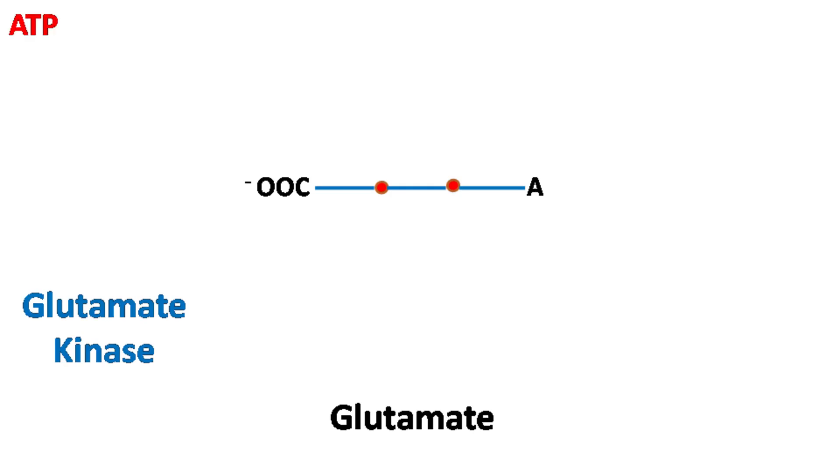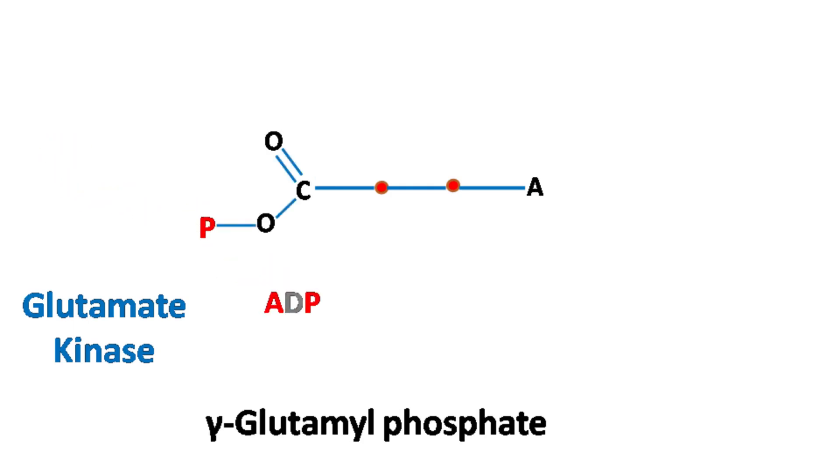In the first step, glutamate is phosphorylated by ATP in presence of enzyme glutamate kinase to give gamma glutamyl phosphate.